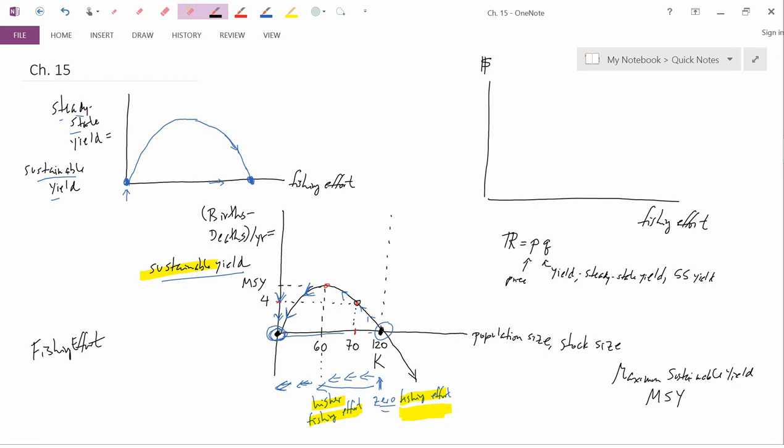So getting back to total revenue, we're going to assume that the price is constant, because we're not interested in thinking about how price changes. So total revenue is price times quantity. The price is constant, and the quantity, the yield, is given by this curve here. The yield, the Q part, is given by the graph in the upper left.